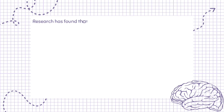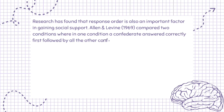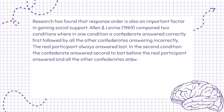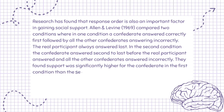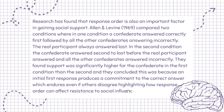Research has also found that response order is an important factor in gaining social support. Allen and Levine (1969) compared two conditions: in one, a confederate answered correctly first, followed by all other confederates answering incorrectly, with the real participant always answering last. In the second condition, the confederate answered second to last. Support was significantly higher in the first condition, because an initial correct response produces a commitment to the correct answer which endures even if others disagree, highlighting how response order can affect resistance to social influence.